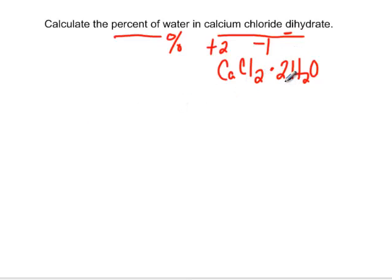So we're going to figure out the total mass of the whole thing, just like we would any other compound. We just have to remember that this little dot here does not mean multiplication. It means and. So it's calcium chloride and water. We don't multiply it. So here we go.